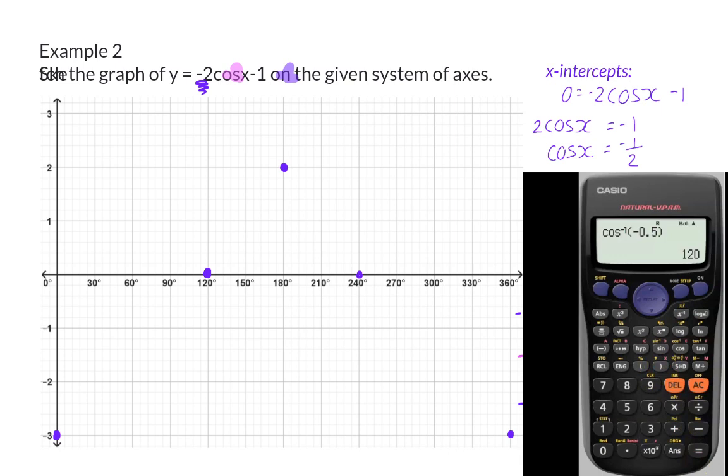So, from the turning point, it is 60 degrees to the left and then also 60 degrees to the right to the two x-intercepts.